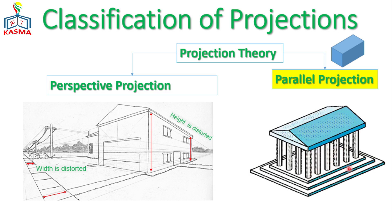If the sketch or projection is done capturing how the observer perceives the scene, we call it a perspective projection. In parallel projection, however, the object is constructed as it actually is — not from the observer's perspective, but representing the object's true dimensions as they are.